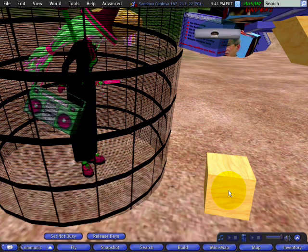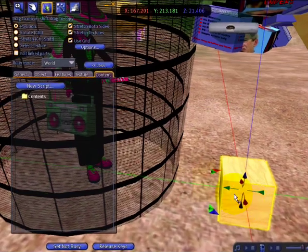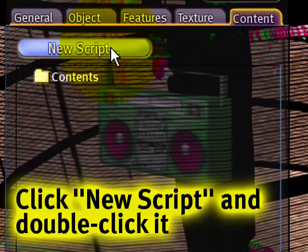So here I have a prim that I rezzed. Simple cube, right click and edit. Under the content tab, click new script.